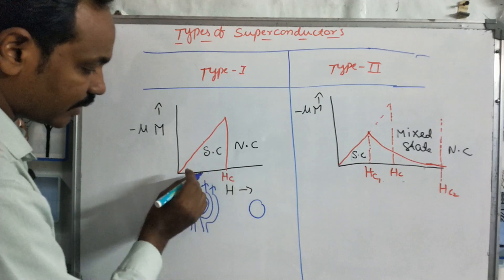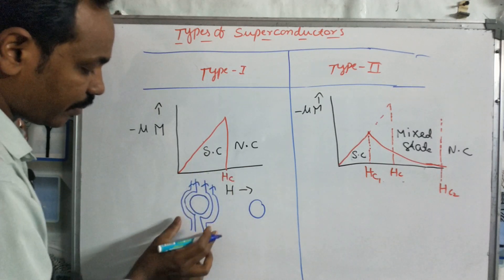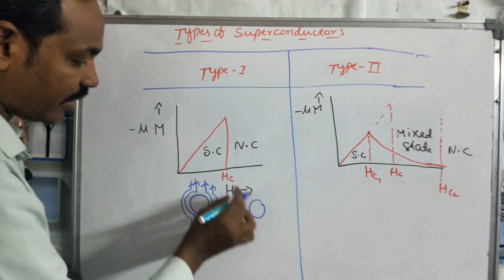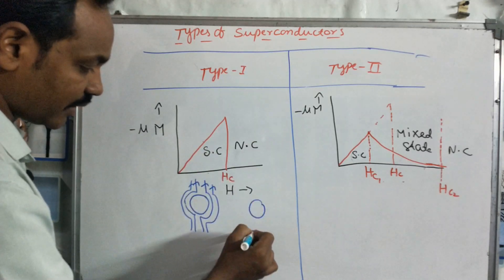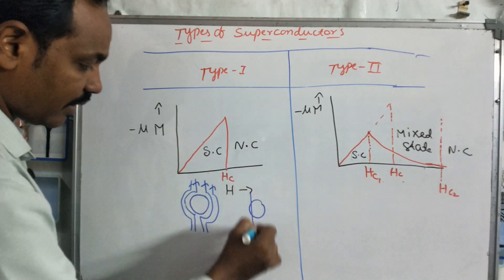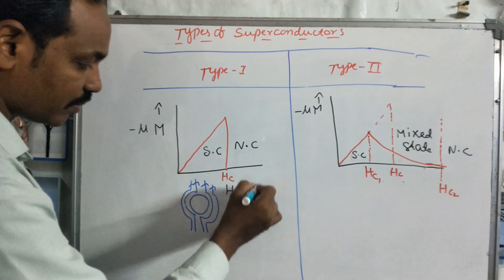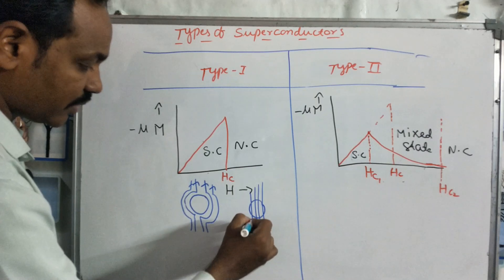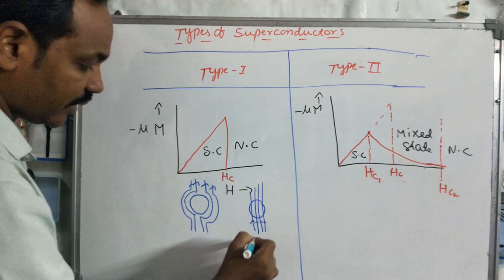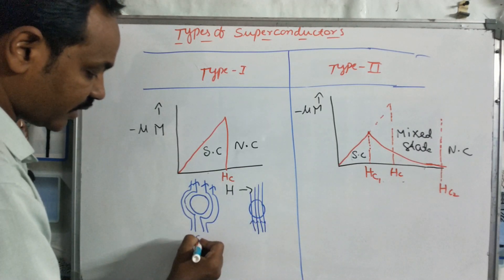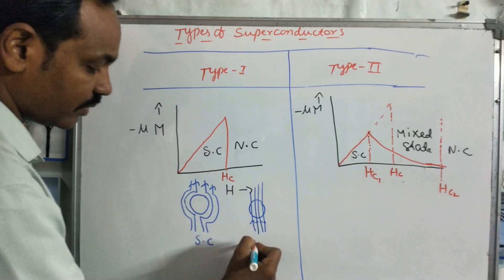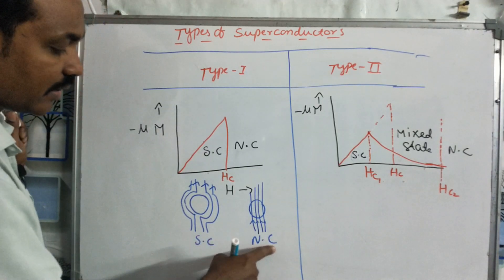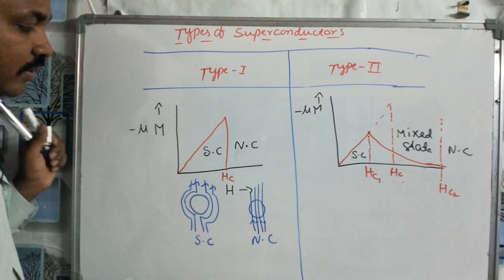This is the position diagram. Below the critical field Hc, the material is perfectly diamagnetic. The flux lines are expelled — this is the superconducting state. After Hc, the flux lines penetrate and this is the normal conducting state.